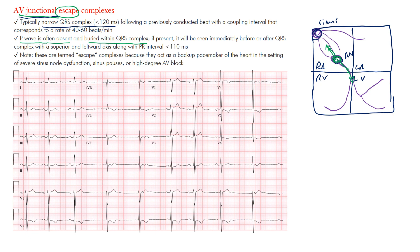These are termed escape complexes because they act as a backup pacemaker in the setting of severe sinus node dysfunction — such as sinus pause or arrest — or high-degree AV block. When the sinus node or AV conduction is out, the AV nodal junction region fires as the escape pacemaker and the rhythm originates from there.